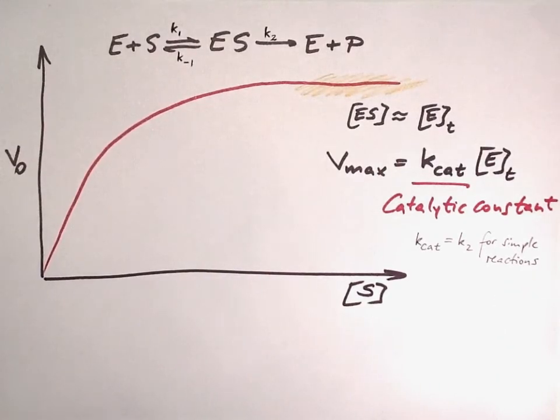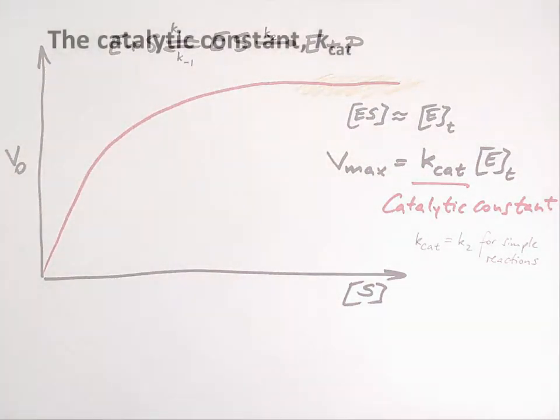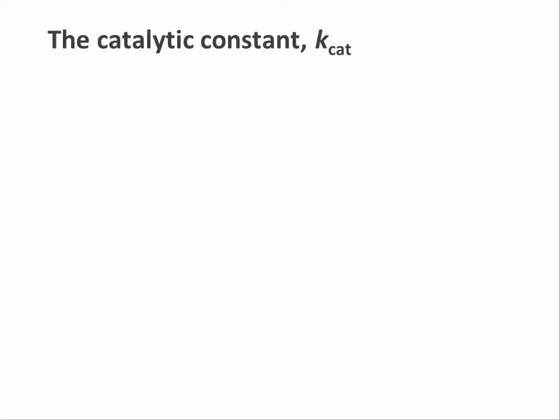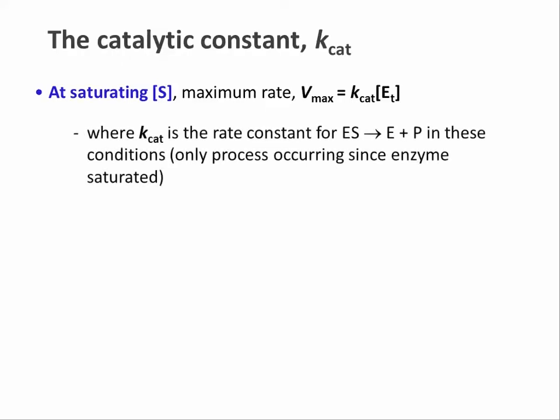For more complex reactions, Kcat may combine several rate constants. So, to recap, at saturating substrate concentrations, the maximal rate Vmax equals Kcat times E total. Kcat is the simplified rate constant of ES decomposition to free enzyme and product, and E total is the total enzyme concentration.